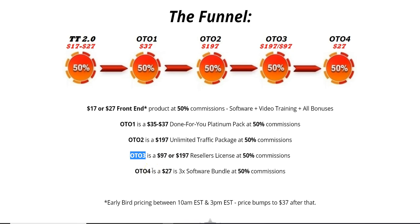OTO number four is a 3x software bundle at $27, which will have additional features to triple your traffic with the software. My recommendation: go through the front end first for the first month, see how your WordPress blog is receiving traffic, and if you're getting decent and engaging traffic from Pinterest, then go for the 3x software bundle. All upsell links will be present inside the front-end members area.